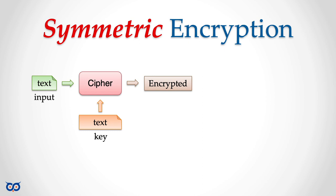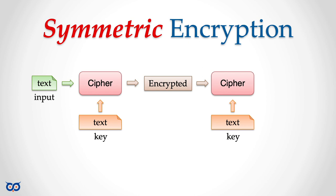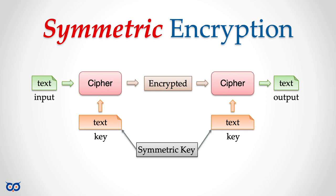We send that encrypted output to our intended recipient. The recipient feeds it back into a cipher and must provide the exact same key we used. If they provide the correct key, they can recover the text. As we demonstrated in the last video, if you don't provide the exact key, you don't get back the correct text.